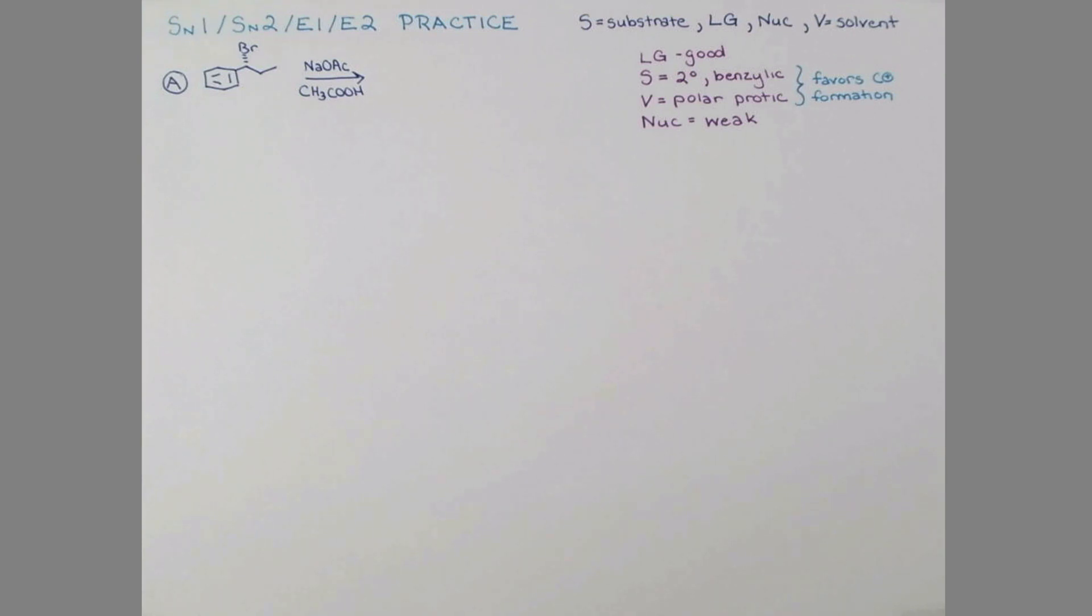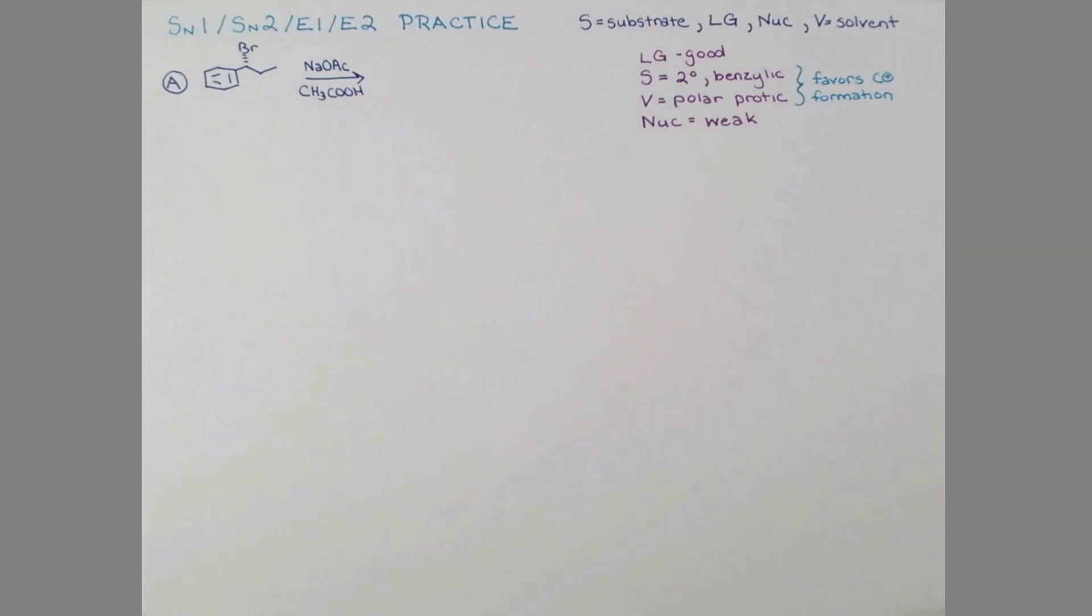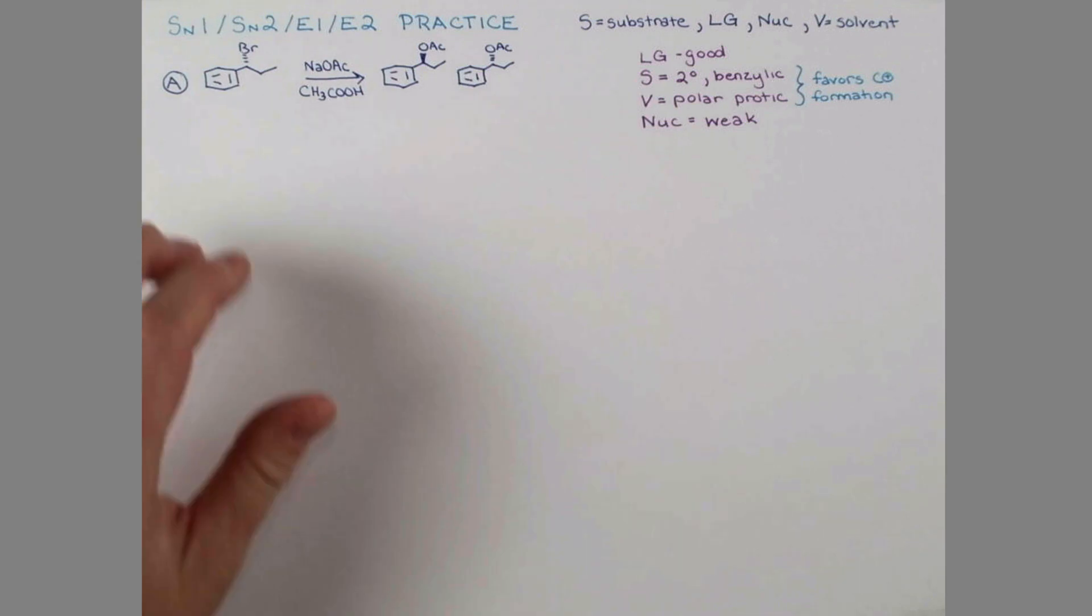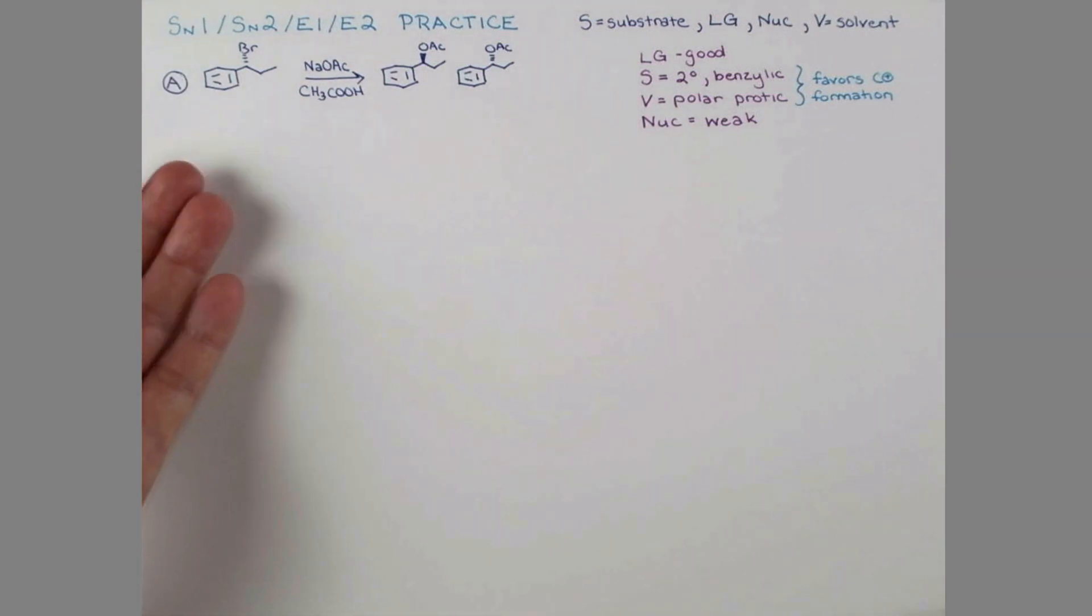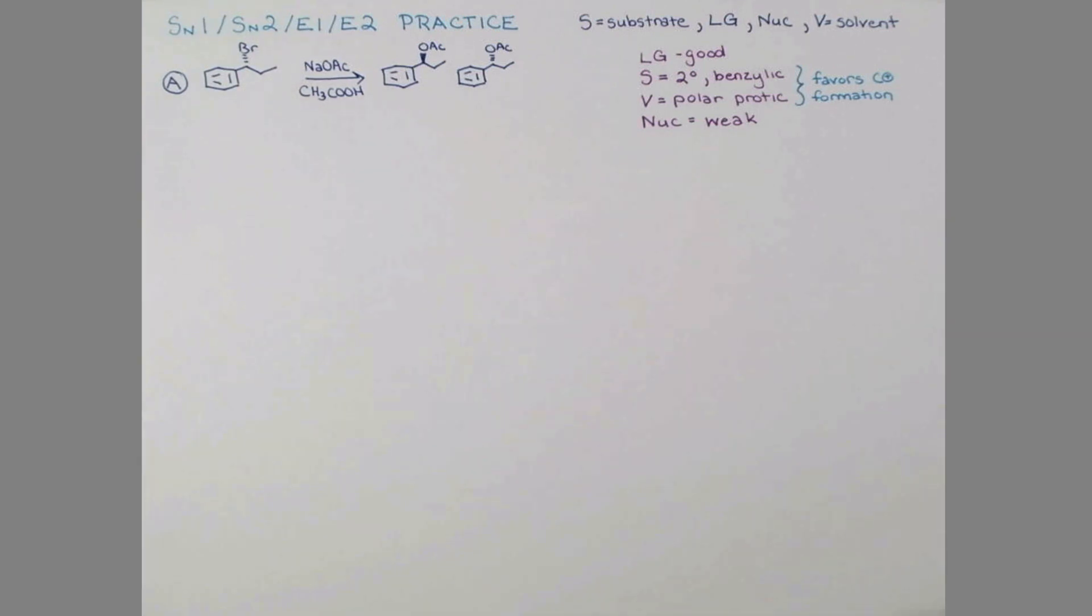The last thing to consider is the nucleophile. Acetate is a weak nucleophile - it has a lot of resonance stabilization so it doesn't have a lot of pushing power for an SN2 reaction, and it's not a strong base that'll favor E2 elimination. This tells us we're going to get carbocation formation. Once the carbocation forms, it's trigonal planar and we can get attack of our nucleophile from either face. This gives two of the products.